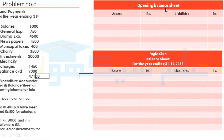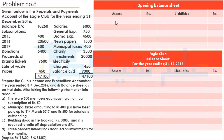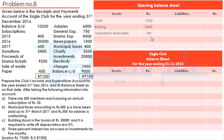Now we will make the opening balance sheet. First, we record the balance brought down Rs. 10,250. Then we write the balance of the building account Rs. 50,000. After that, subscription receivable from 2015 we record. And then we will write the capital fund as the balancing figure Rs. 60,650.